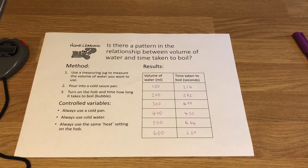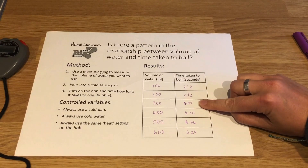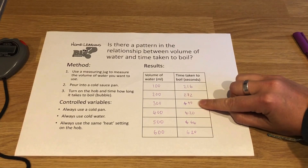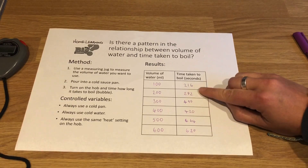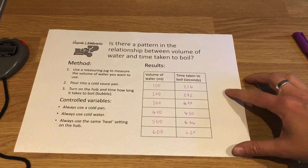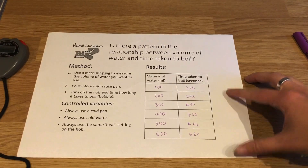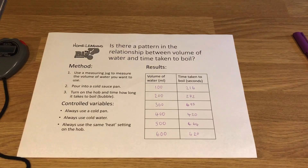I've completed my practical and collected all my results. There's a bit of a funny thing going on with one reading — we'll identify what caused that at school. When we draw the graph we'll look at how to display data that doesn't quite fit the pattern; the numbers increase, then dip, then increase again. Sometimes that happens and there are various things that might have caused that strange dip in the pattern.